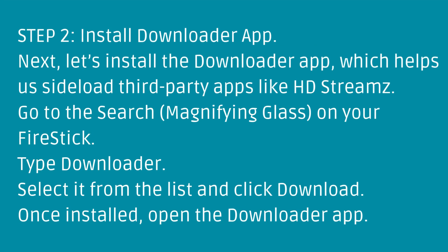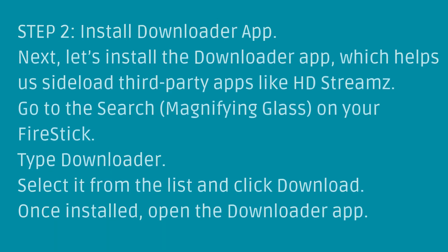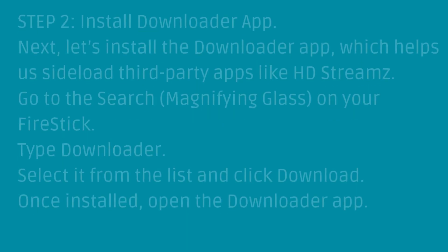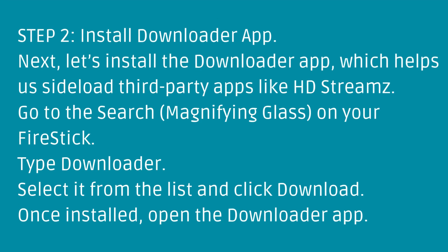Step 2: Install the Downloader app. Next, let's install the Downloader app, which helps us sideload third-party apps like HD Streams. Go to the search magnifying glass on your Fire Stick, type Downloader, select it from the list and click Download. Once installed, open the Downloader app.